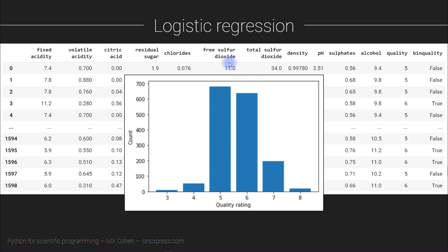The next step is to run a logistic regression, which is called a logit regression. There are a couple of different methods for fitting a logistic regression — in this case I used the Newton method, so you need to figure out how to specify the method used to fit the model.